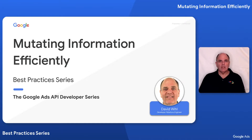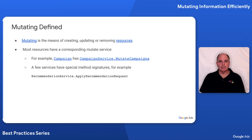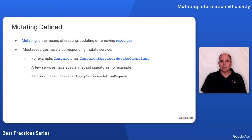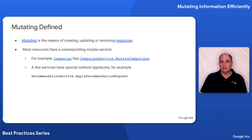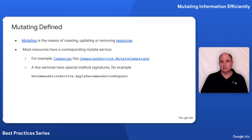Welcome to Mutating Information Efficiently, part of our Best Practices series. Let's start with a definition of what mutating means. It means you're going to create, update, or remove a resource. Resources are really the key to the Google Ads API because they define the actual objects that you'll be dealing with, like campaigns, ad groups, and ads.